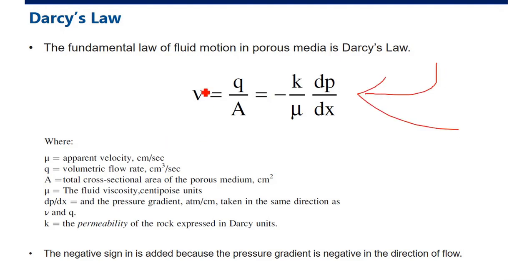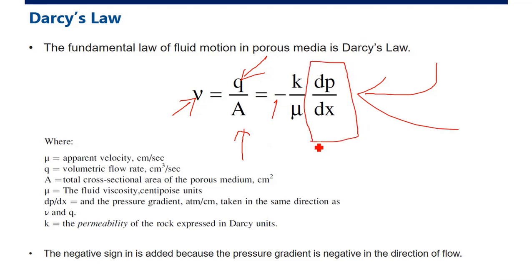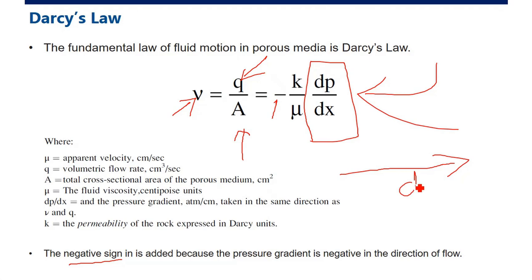This is the basic Darcy's law. Velocity is the volumetric rate q divided by the cross-sectional area of the porous medium. It equals minus permeability divided by viscosity, multiplied by the pressure gradient dP/dx. The negative sign is added because the pressure gradient is negative in the direction of flow.